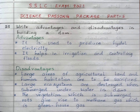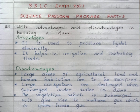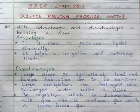Now we will see the disadvantages. First, large areas of agricultural land and human habitation are to be sacrificed. Second, large ecosystems are destroyed when submerged under water in dams. Third, the vegetation which is submerged rots, giving way to methane gas, which is a greenhouse gas.